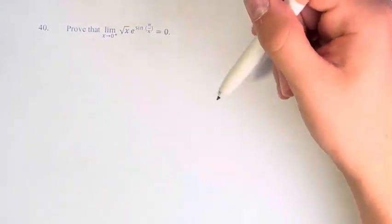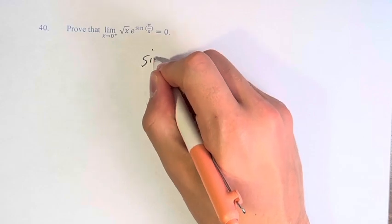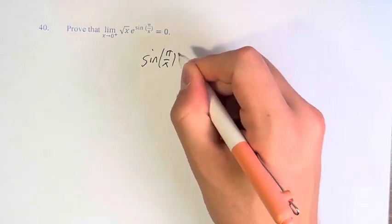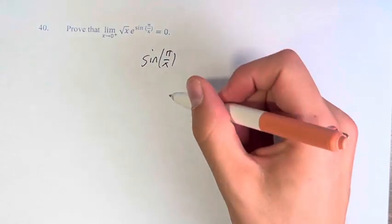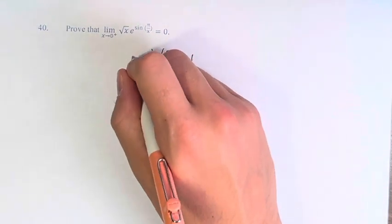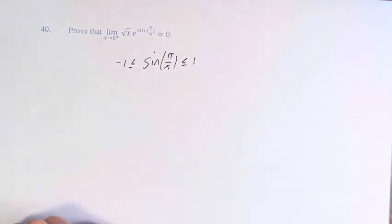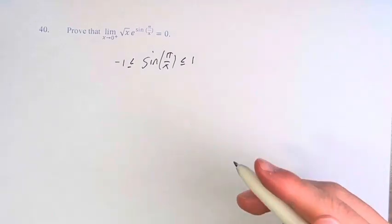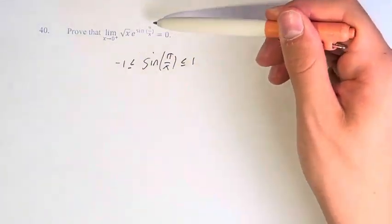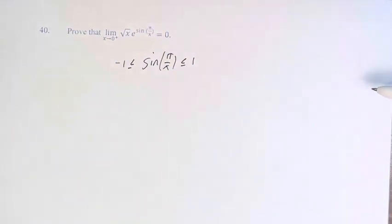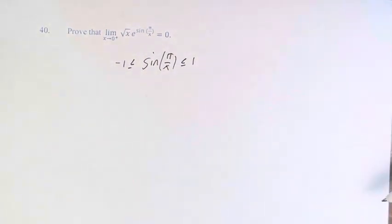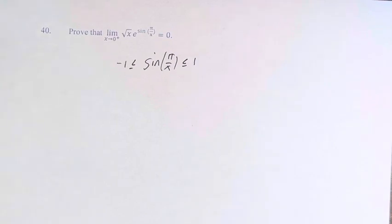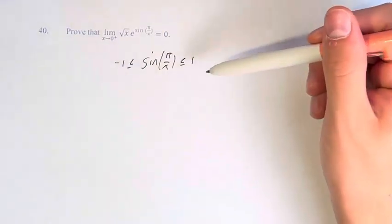Let's start with the sine of pi over x. We know sine taking on any value is going to be less than or equal to 1 and greater than or equal to negative 1. That's just what the sine function is — it oscillates between the values of negative 1 and 1 over and over again. Therefore, we can say it's between these two values.